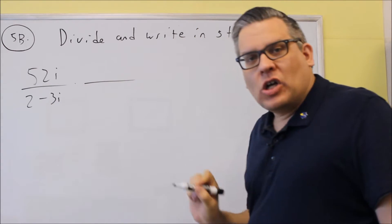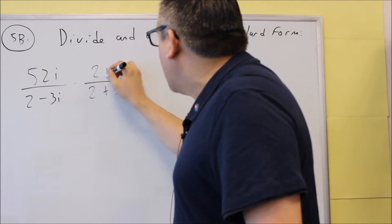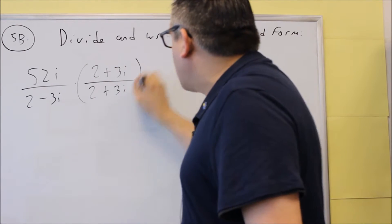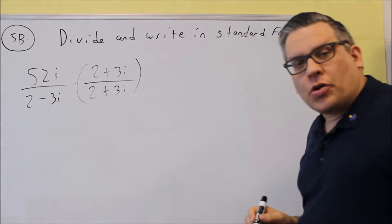So conjugate is the same thing with the opposite sign. So what you do to the bottom, you have to also do the top. This way we're multiplying by a power of 1 and we're not changing our original problem.